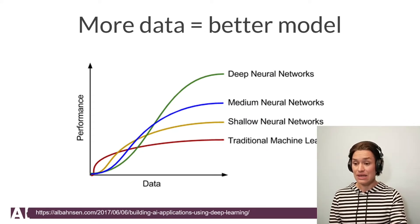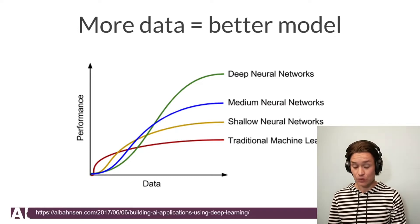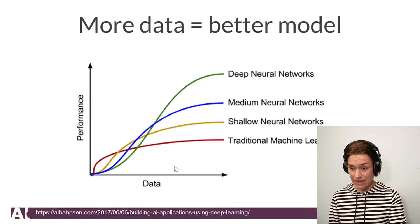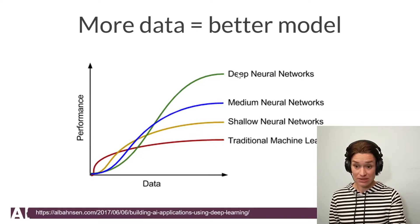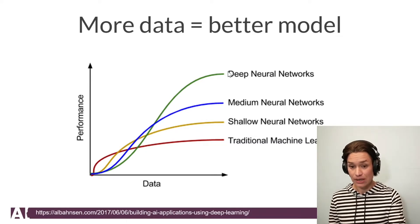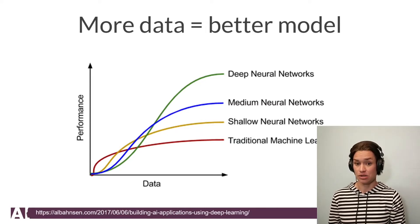This graph shows how the performance of deep neural networks depends on the amount of data. At the top in green you have deep neural networks, and at the bottom traditional machine learning — where a person defines the features. Traditional machine learning doesn't need too much data at the beginning and starts performing well early. Deep neural networks lag a little; they need some data to get going. But the more data you give a deep neural network to train, the better it performs.